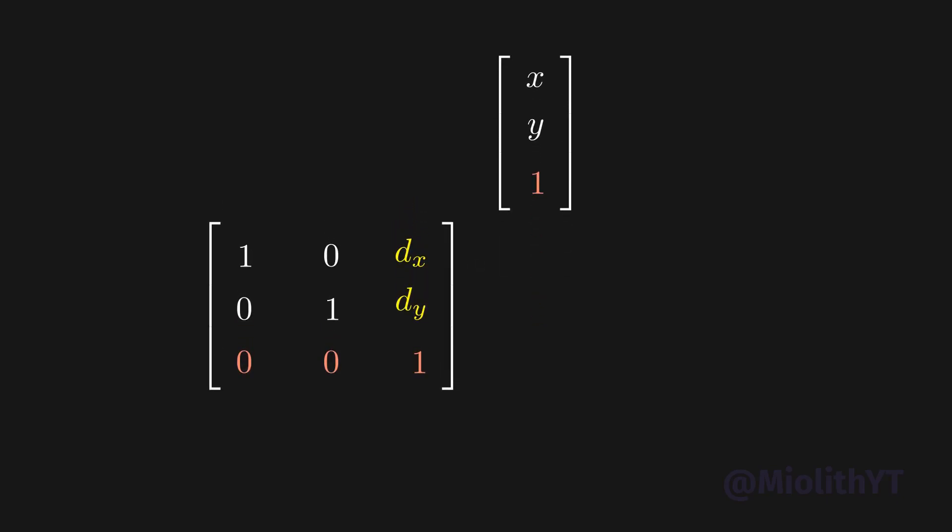See by yourself. On the first row of the results, the Y component gets cancelled leaving only X and the translation value dx. For the second row, the X component gets cancelled, leaving only Y and the translation value dy. The last row now keeps the initial homogeneous value provided by the vector, which is 1.